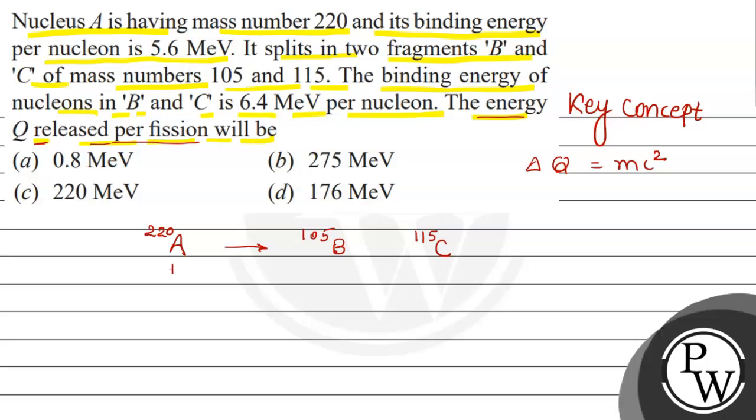This binding energy is given per nucleon, that is 5.6 mega electron volt. And this binding energy is 6.4 mega electron volt per nucleon. Now let's see the solution.